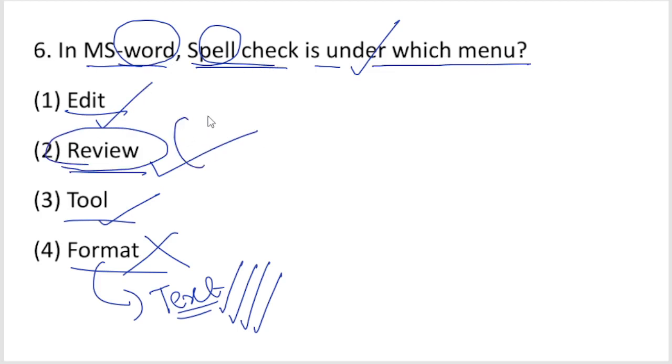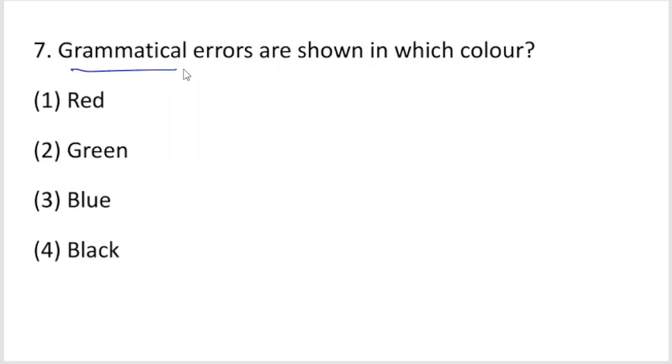Grammatical errors are shown in which color on the screen? When there's a grammatical error in a sentence, it shows a green underline. When there's a spelling mistake, it shows a red underline.